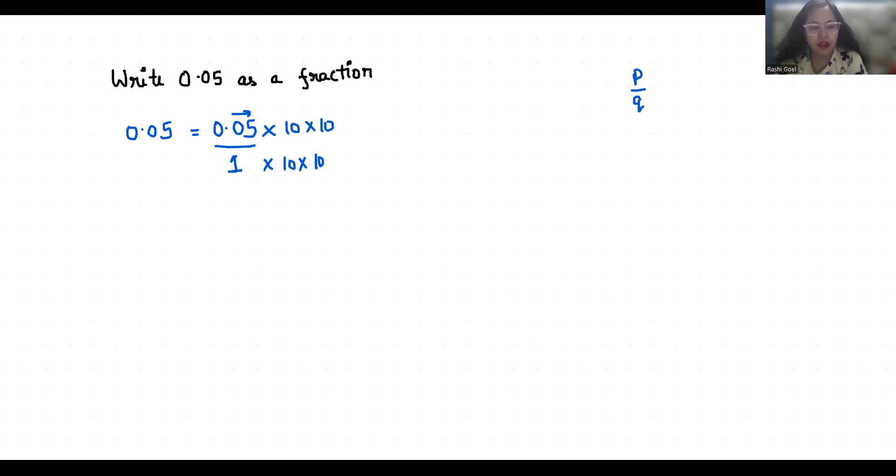Our numerator becomes 5 and denominator becomes 100. So it comes in fraction form and now we are going to reduce it.